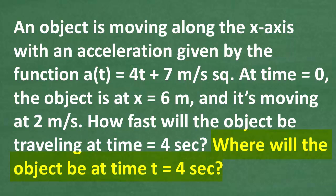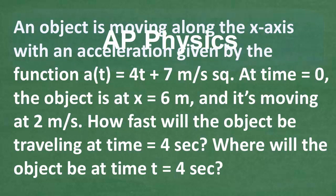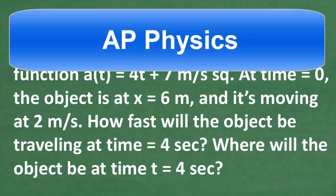So we have two questions here. How fast is the object moving at t = 4, and what is the position at t = 4 seconds? This is a pretty classic type of physics problem, certainly something you would not be surprised to see on an AP physics exam.